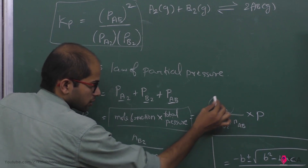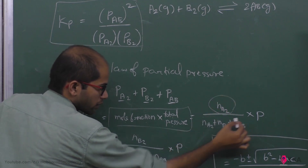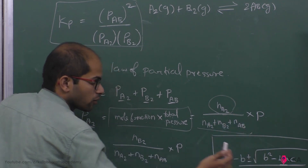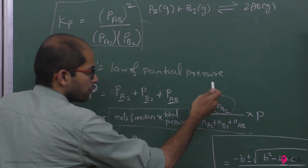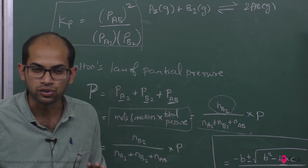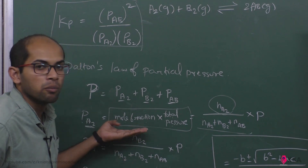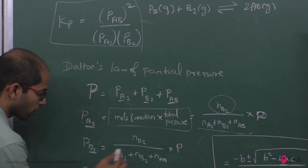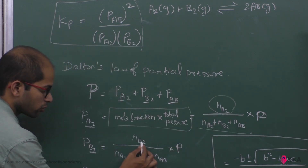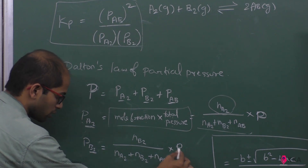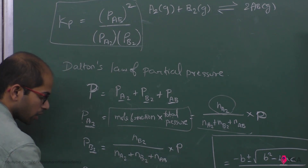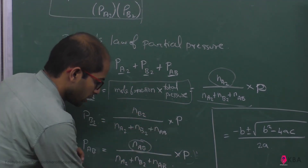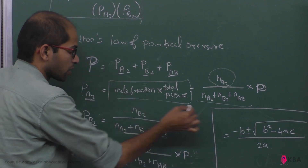The mole fraction of A₂ equals moles of A₂ divided by total number of moles. Similarly, partial pressure of B₂ equals moles of B₂ divided by total moles, times total pressure. Partial pressure of AB equals moles of AB divided by total moles, times total pressure.